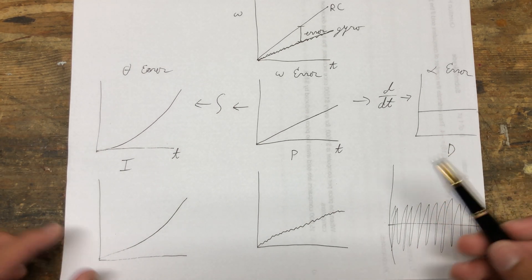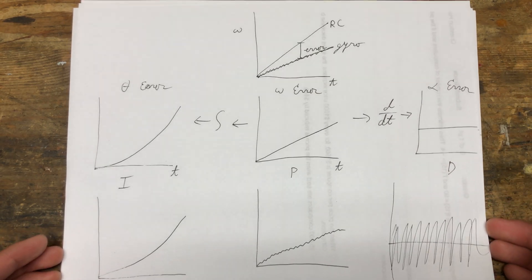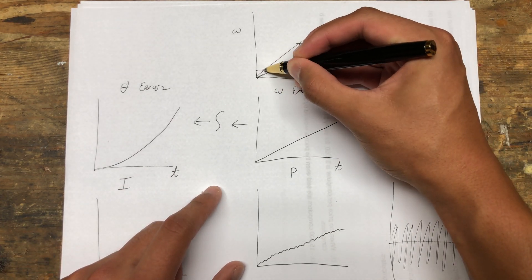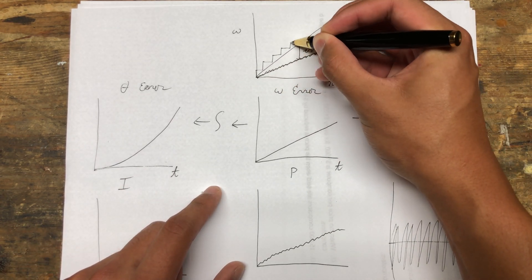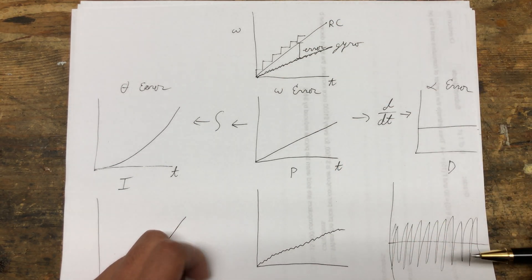That's why getting rid of noise in the gyro signal is so incredibly important. A similar thing can happen if you have a noisy RC signal. A lot of times, the RC signal is very stair-steppy, like this, and that can have a similar effect with the D-term.